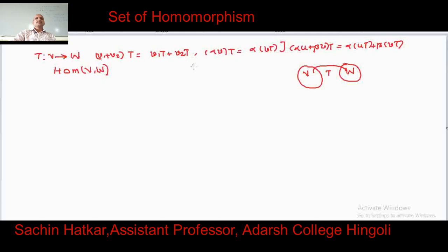We combine these two conditions into a single one and write it as T(αU + βV) = α·T(U) + β·T(V). Here T(U) and T(V) are elements of vector space W, and U, V are elements of V.